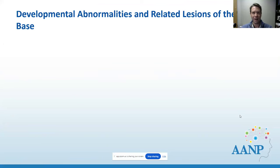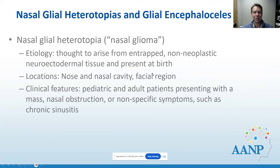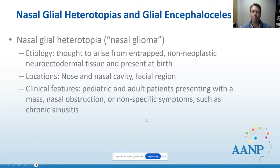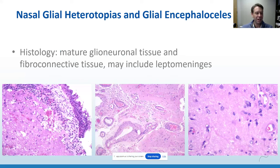Starting with developmental abnormalities and related lesions as a warm-up: nasal glial heterotopias, also known as nasal gliomas (even though they're not gliomas), are thought to arise from entrapped non-neoplastic neuroectodermal tissue and are present at birth, though they may present much later with very nonspecific findings. Even chronic sinusitis-type findings are found as a mass on imaging. On histology, this is something very familiar to us, and we're often going to get this from ENT.